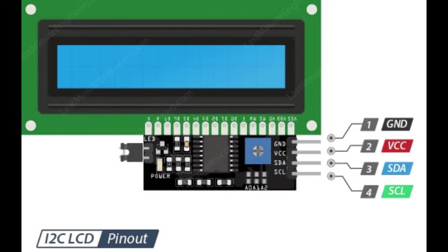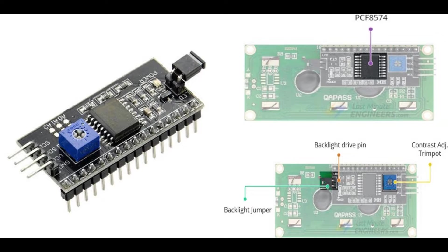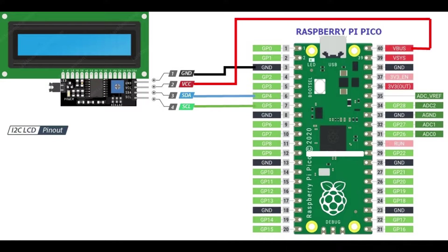The I2C module has a total of 20 male pins. 16 pins face the rear side, and 4 pins face towards the front side. The 16 pins connect to the 16x2 LCD, and two pins out of the four front pins are SDA and SCL. SDA is the serial data pin, and SCL is the clock pin. The remaining two pins are for power supply — VCC and ground.